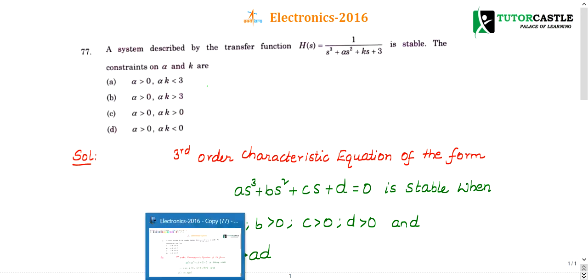Question number 77: A system described by the transfer function H(s) = 1/(s³ + αs² + ks + 3) is stable. The constraints on α and k? This is a very simple question, a zero-level question. Let's see what concept this is based on.